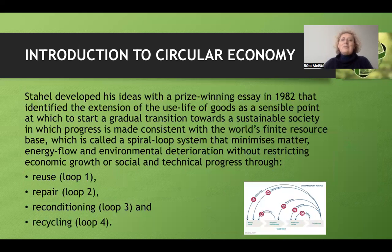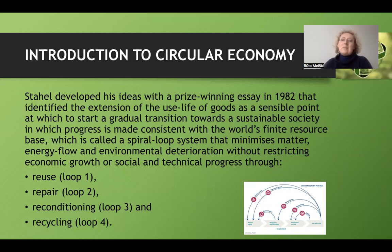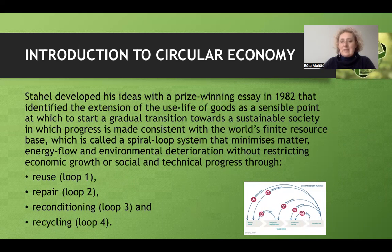Stachel developed his ideas with a prize-winning essay in 1982 that identified the extension of the useful life of goods as a sensible point at which to start a gradual transition towards a sustainable society, in which progress is made consistent with the world's planetary resource base. This is called a spiral loop system that minimizes matter and energy flow and environmental deterioration without restricting economic growth or social and technical progress.